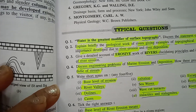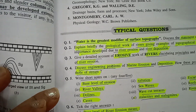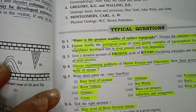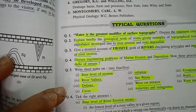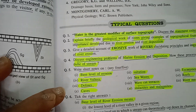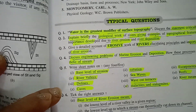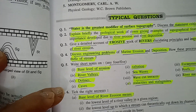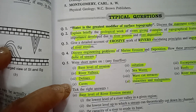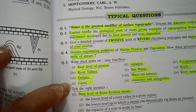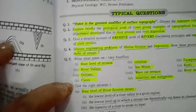Question five: write short notes on any four or five of the following — first, base level of erosion; second, saltation; third, escarpment; fourth, river valley; fifth, sea waves; sixth, reefs; seventh, dolines; eighth, wave-cut terrace; ninth, river meandering; tenth, cave; and eleventh, stalactite and stalagmite.